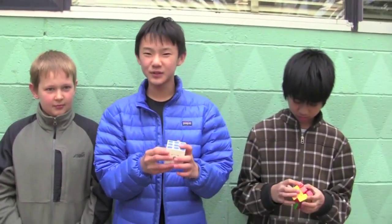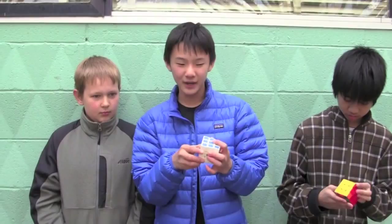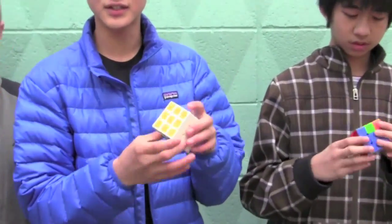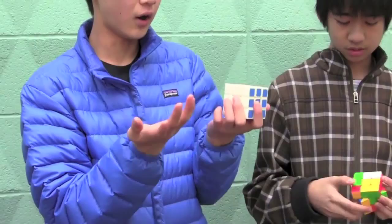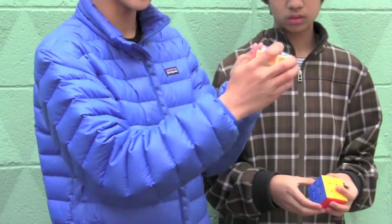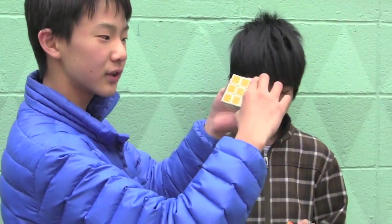So whenever you see an R, an L, or anything like that, it signifies to turn the cube clockwise. So if I had R, it'd be the right, turn it clockwise.